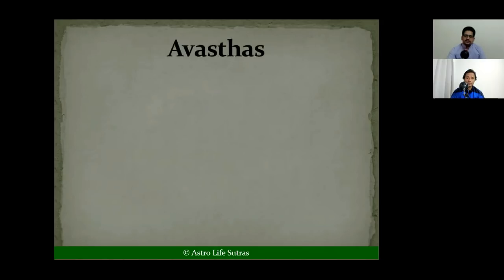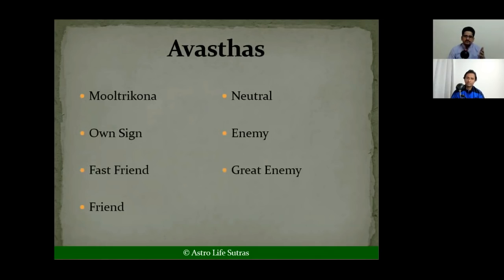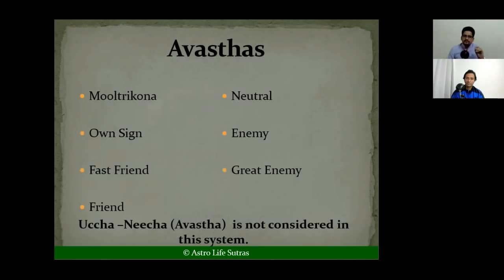Dvadashamsha chart gets two points, and D30 gets one point. Now, the avasthas: a planet could be in Moolatrikona sign or in its own sign. For finding out 'fast friend,' we need to utilize natural friendship and temporary friendship, combine them through the Panchada Maitri Chakra, and classify a planet as great friend, friend, neutral, enemy, or great enemy. The key point is: in this system we are not using Uccha-Neecha avastha.